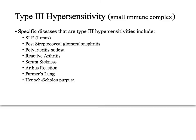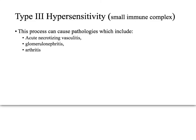Lupus is implicated in type 3 hypersensitivity — the antigen is likely the nucleus or double-stranded DNA. Other examples include post-streptococcal glomerulonephritis, reactive arthritis, serum sickness, and the Arthus reaction. The three main processes for type 3 are necrotizing vasculitis, glomerulonephritis, and arthritis.